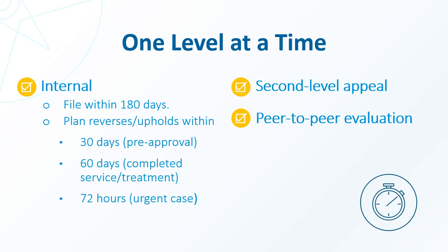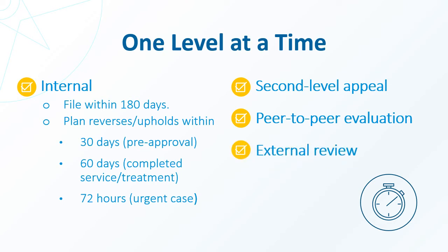Finally, an external appeal is a review of the denial by an independent, impartial expert. Based on your state, the external review can be filed through the state's Department of Insurance or follow the Federal Department of Health and Human Services administered review process. If your case is urgent, you may be advised to file an external review request at the same time as an internal appeal.